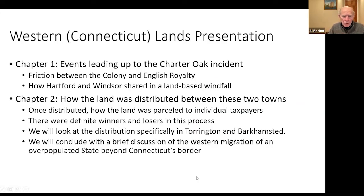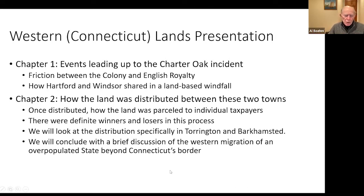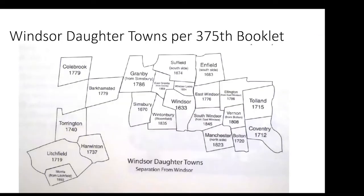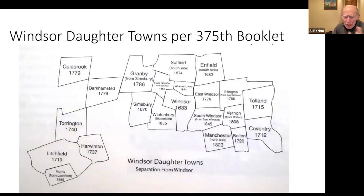Chapter one is going to cover the events leading up to the Charter Oak incident. You're going to see there's some friction between the colony and English royalty, and how Hartford and Windsor shared this land-based windfall. Next week we'll talk about the land they got, how it was distributed between the two towns, and how each town parceled it out to individual taxpayers. We will look specifically at Torrington and Barkhamsted, and very briefly at the westward migration of an overpopulated Connecticut colony.